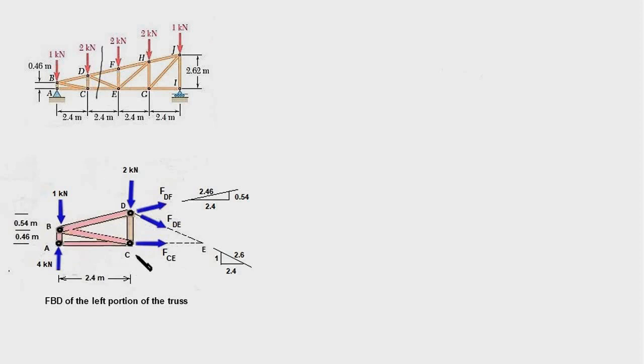And now you can see that these forces are a system of non-concurrent forces. So we have three equilibrium equations. Recall that in method of joints we had two equations for each of the pin because we were dealing with concurrent forces. But here we are dealing with non-concurrent forces and therefore we have three equations: two force equations in x and y direction and one moment equation.